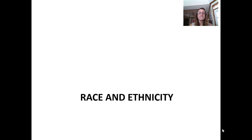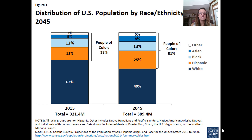Here are some examples pulled from the Robert Wood Johnson Foundation and the Kaiser Family Foundation to illustrate what some of these differences look like. This bar chart shows the difference in population between 2015 and what's projected for 2045. The key takeaway is that the population is changing — we've got a white majority at 62%, but that share will be smaller in 2045.